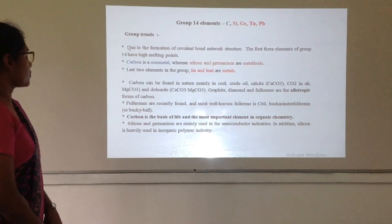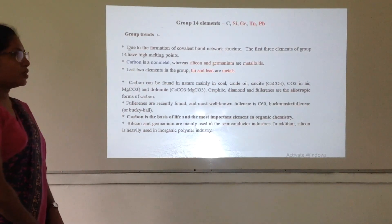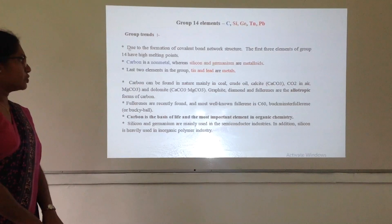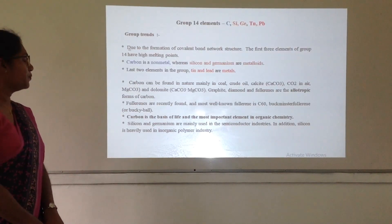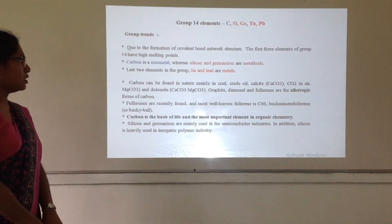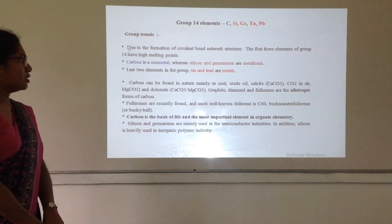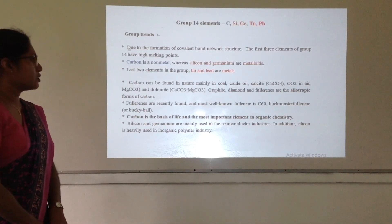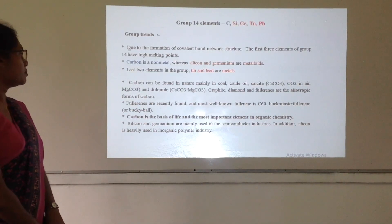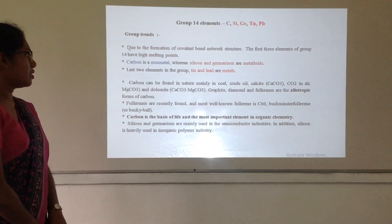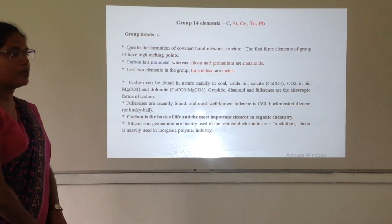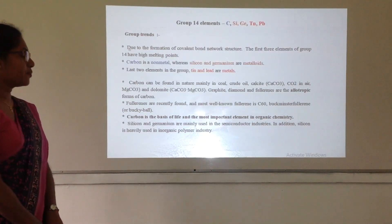If we talk about the natural occurrence of carbon, we can naturally find carbon in coal, calcium carbonate, carbon dioxide, dolomite, graphite, diamond, and fullerenes.